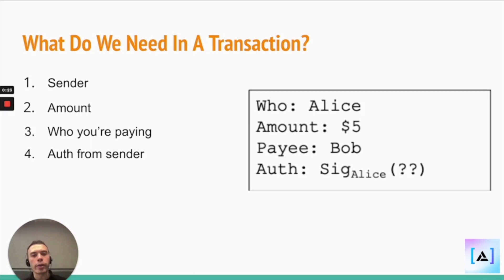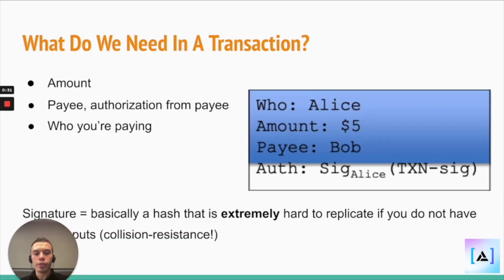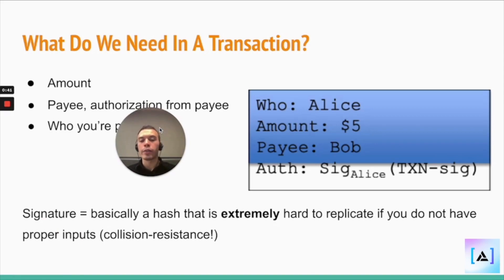It wouldn't make sense for our network to just willy-nilly be sending funds all over the place without the people owning those funds approving that transfer. So we get that authorization via digital signatures — a digital signature being basically a hash that is extremely hard to replicate if you do not have the proper inputs.